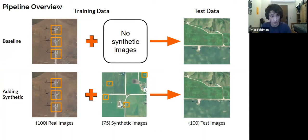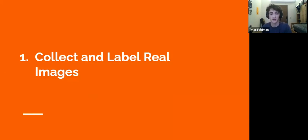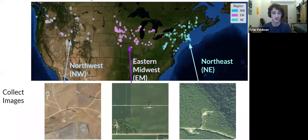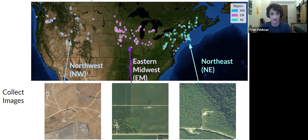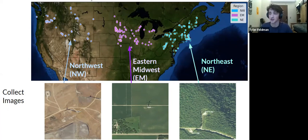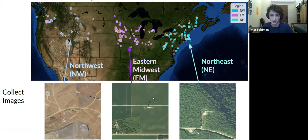The first step is to collect and label real images. We use a dataset called NAIP, which has high-resolution imagery available all across the U.S. We collected images in three different domains split by state: the Northwest, which generally has a brownish hue — desert and some grasslands; the Eastern Midwest, which is more greenish and farmland; and the Northeast, which is mostly forests and also very green. The idea is that imagery in the Northwest looks similar to itself but different from the Eastern Midwest or Northeast.